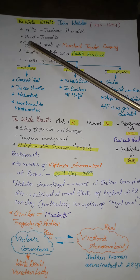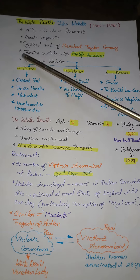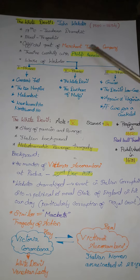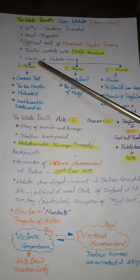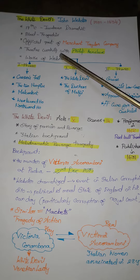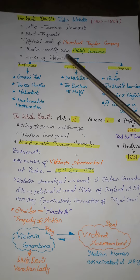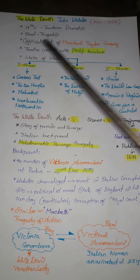He has written many blood tragedies and is the official poet of Merchant Taylor Company. He has also worked in Theatre Works along with Philip Henslow.